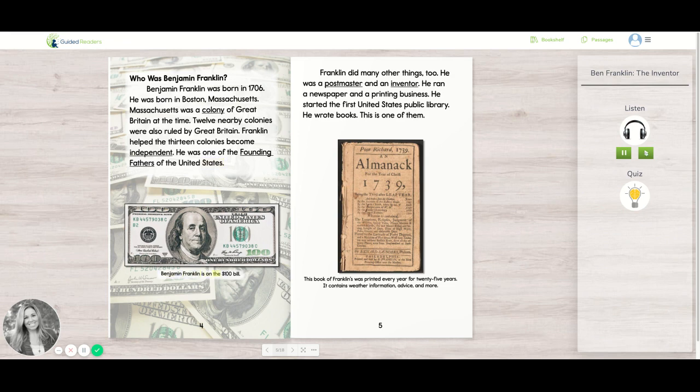Benjamin Franklin is on the $100 bill. Franklin did many other things too. He was a postmaster and an inventor. He ran a newspaper and a printing business. He started the first United States public library. He wrote books.